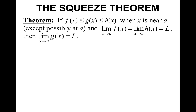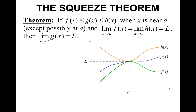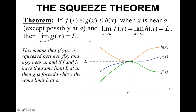Pause the video and see if you can jot down what you think this theorem means in your own words. If we were to look at a graph, we have three functions: f of x is smaller than g of x, and g of x is smaller than h of x. If we were to look around x equals a, we will see that f of x and h of x are approaching the same value. And we have g of x in the middle, which means that the limit of g of x is going to be squeezed between the limits of f and h — hence the name squeeze theorem. So generally, this means that if g of x is squeezed between f of x and h of x near a, and if f and h have the same limit L at a, then g is forced to have the same limit L at a.